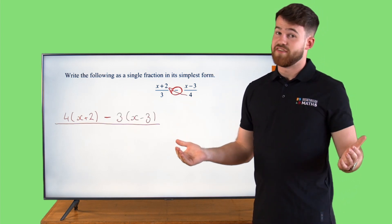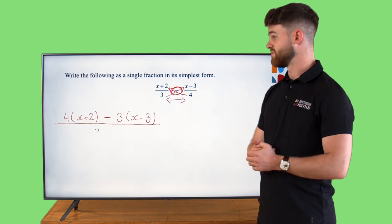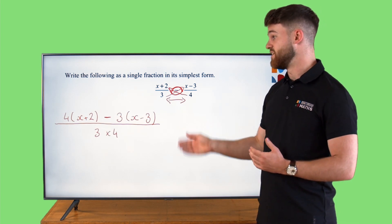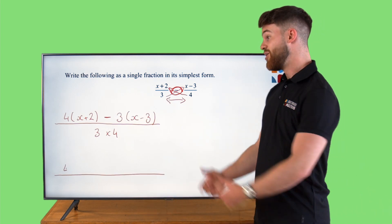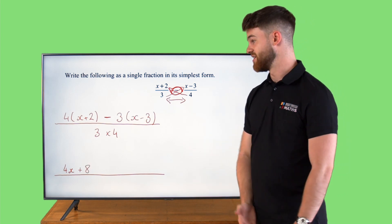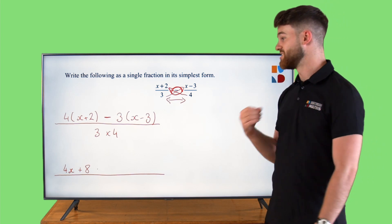Then the bottom is very simple. Just 3 multiplied by 4. Now if we finish this off we can see 4 multiplied by x will give us 4x. 4 multiplied by plus 2 will give us plus 8.